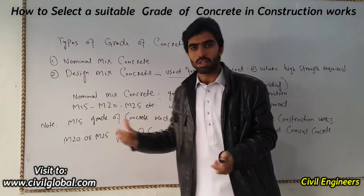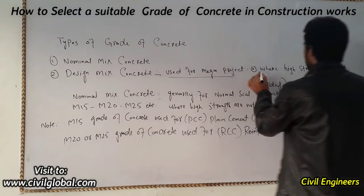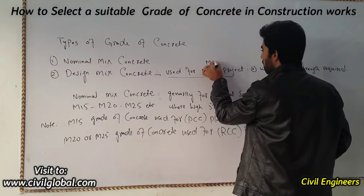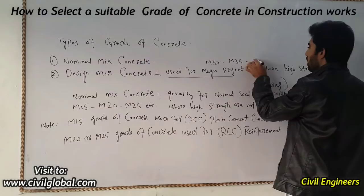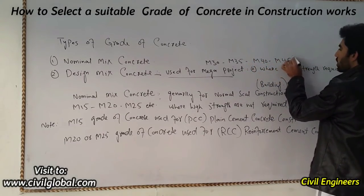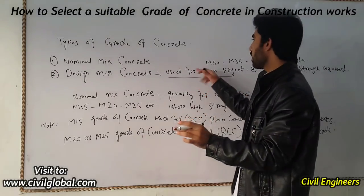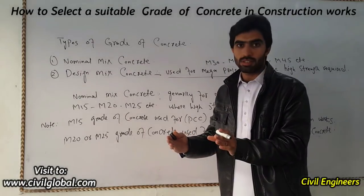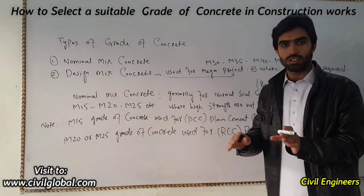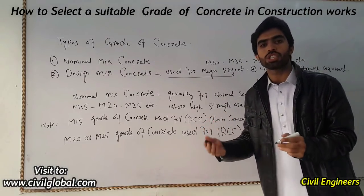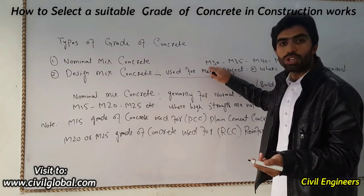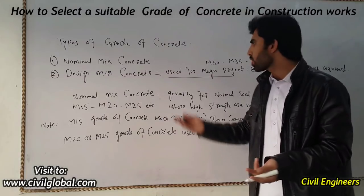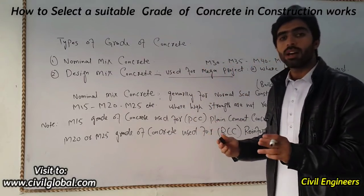For Design Mix Concrete, we have M30, M35, M40, M45, etc. These are the Design Mix grades. This grade of concrete can be changed because it depends on the structure and how much strength is required. If we need very high strength, we use more than M45 grade.